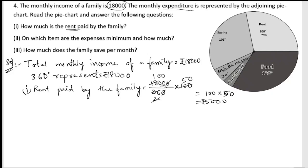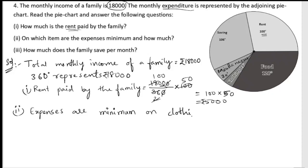The second question: on which item are the expenses minimum, and how much? The expenses are minimum on clothing, because clothing is only 14 degrees in the pie chart. So the expenses are very low on clothing.